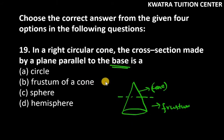that how will the cross section be our base? So we know this is a circle. The cross section made by a plane parallel to the base is a circle. Not frustum of a cone. Don't write it wrong. This is a circle. So this is the answer for question number 9.